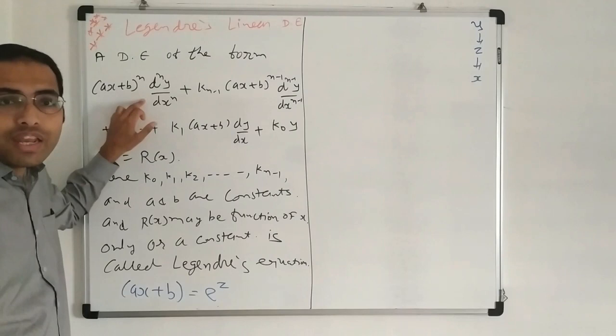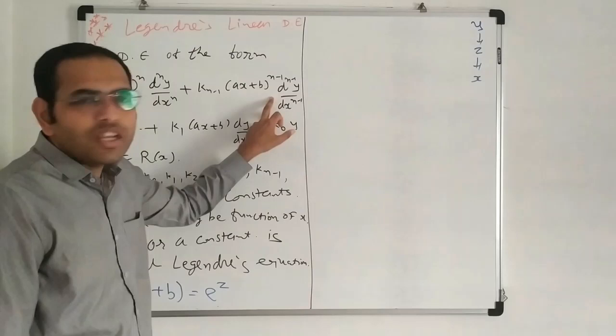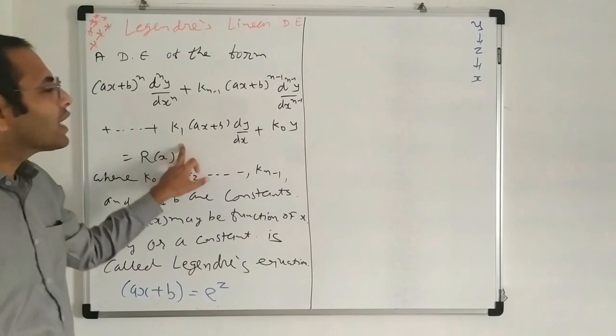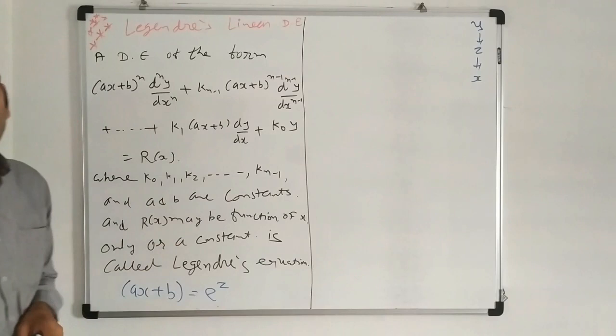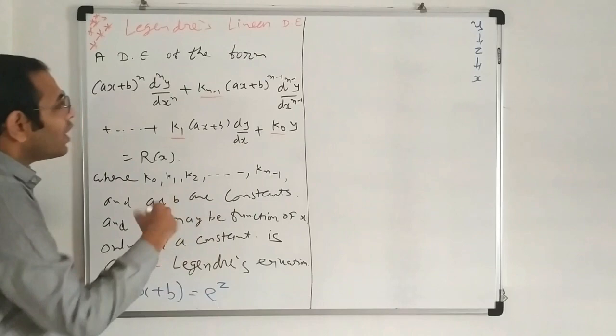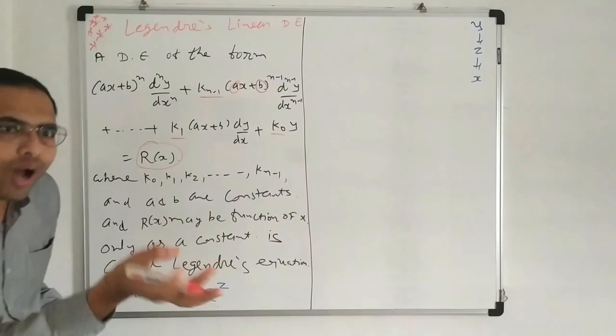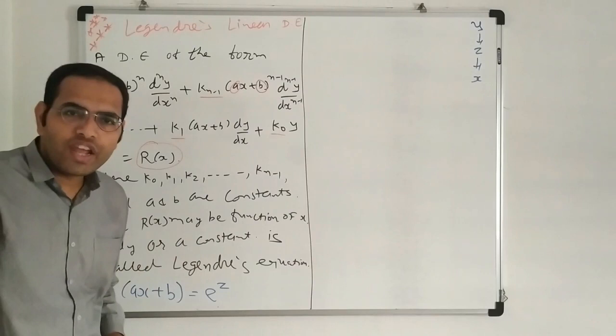A differential equation of the form (AX + B)^N times the N-th derivative d^N Y/dX^N, plus K_{N-1}(AX + B)^{N-1} times d^{N-1}Y/dX^{N-1}, plus and so on, K1(AX + B) dY/dX, plus K0·Y equal to R(X), where K_{N-1}, K_{N-2}, and so on, K1, K0, A, and B are constants, and R(X) is a function of X or a constant term — this is the Legendré Linear Ordinary Differential Equation.